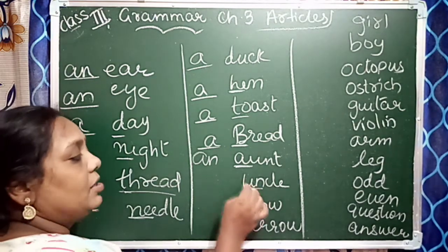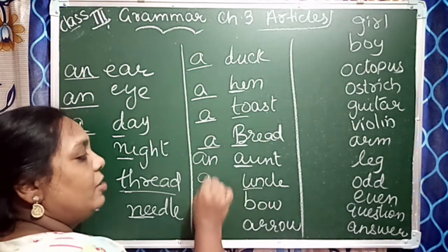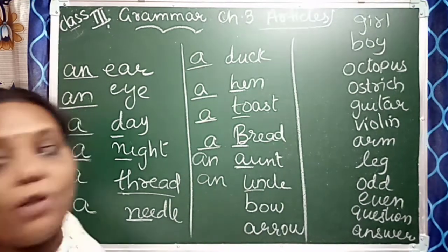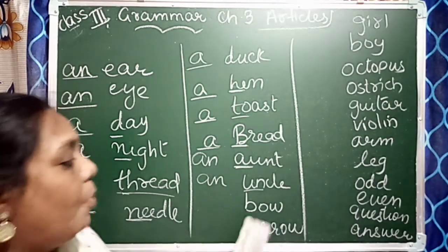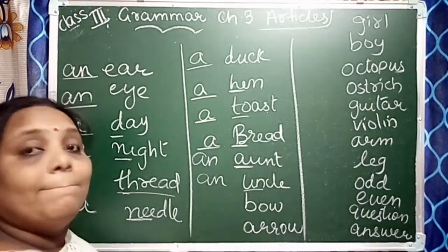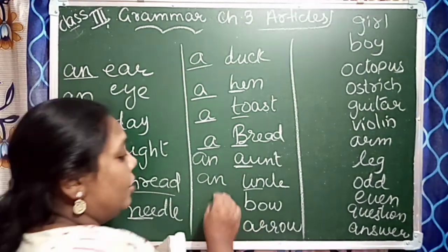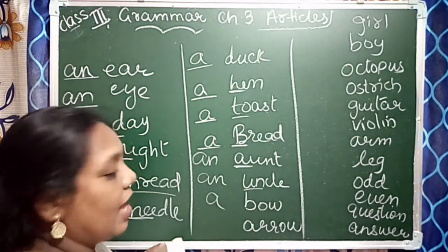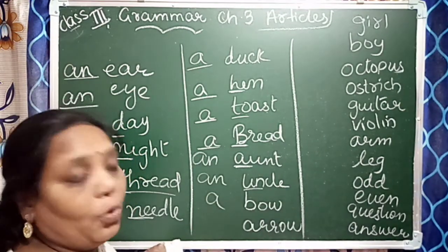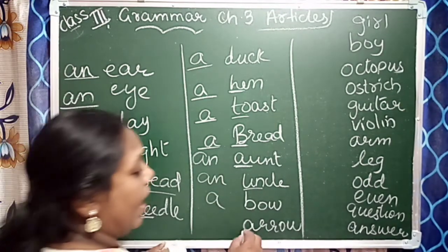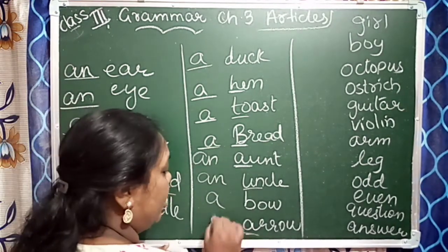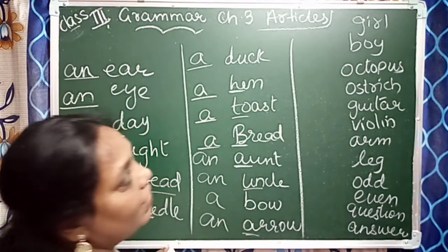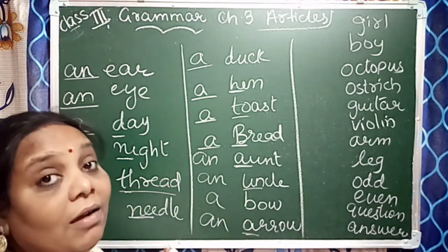Bow — vowel or consonant? Arrow — it has a vowel sound, so we will write 'an'.